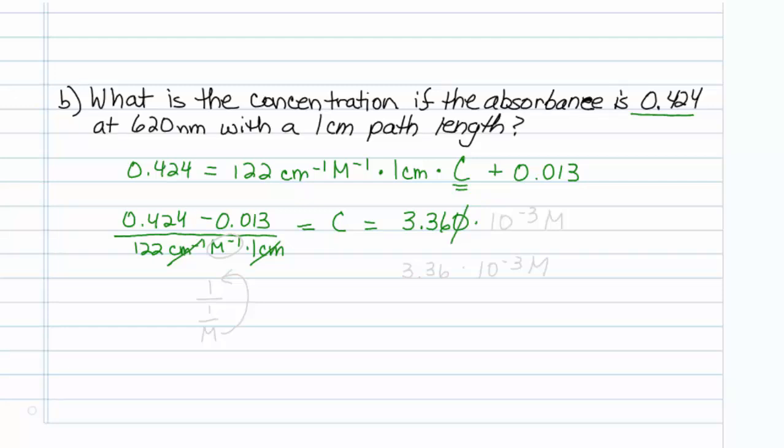Three sig figs is good for this: 3.36 times 10 to the minus 3. Notice that 1 over 1 over molar just makes our units molar, which is perfectly good. So our answer is 3.36 times 10 to the minus 3 molar. That's all there is to that.